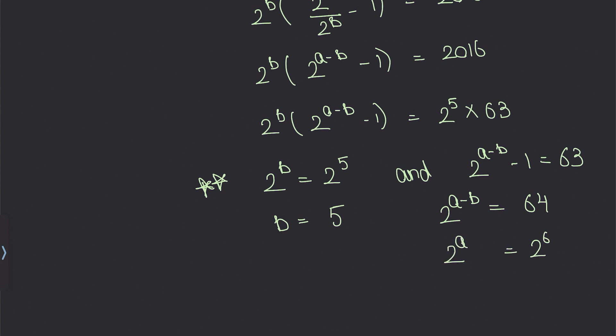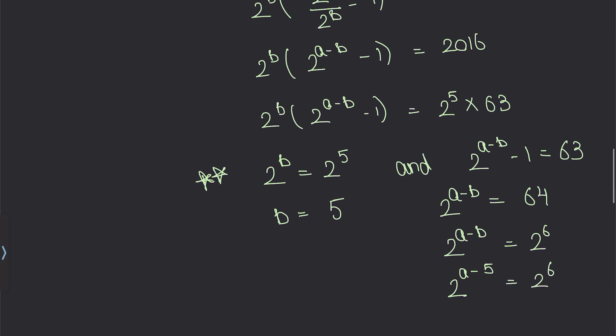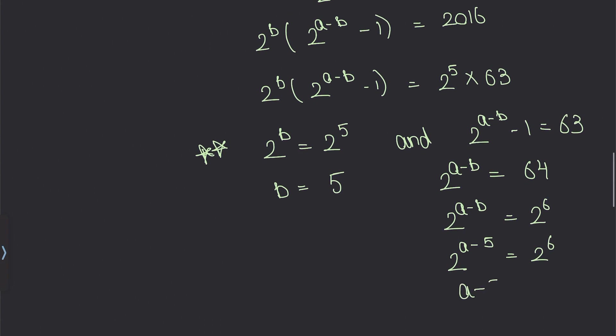so we get 2^6 = 2^(a-b). Now using the fact that b = 5, we can say 2^(a-5) = 2^6, or a - 5 = 6, which gives us a = 11.